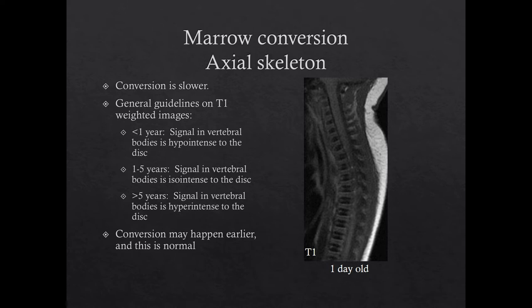This is a general guideline for marrow signal in the spine. In children less than one year, the vertebral bodies are typically hypo-intense to the adjacent disc on T1-weighted images. In children between one and five, the vertebral bodies and discs are iso-intense. In children greater than five, the vertebral bodies are hyper-intense to the adjacent disc. However, marrow conversion is often seen earlier than this typical guideline, and this is normal.